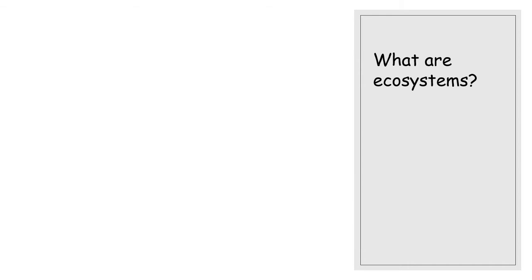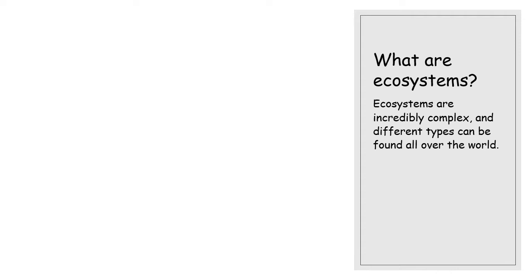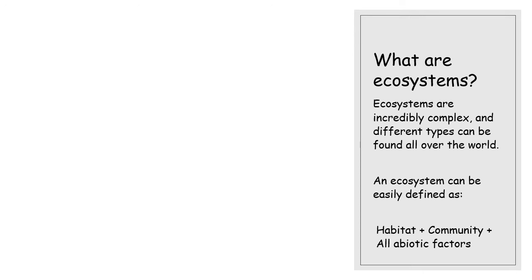I will give you some of the definitions. We'll start with ecosystems, which is again a word you may be familiar with from David Attenborough or previous biology lessons. Ecosystems are incredibly complex. There are different types of ecosystems all around the world, and an ecosystem can be defined as the habitat plus the community plus all abiotic factors — so where something lives, all the organisms that live there, and all of the conditions they live in.